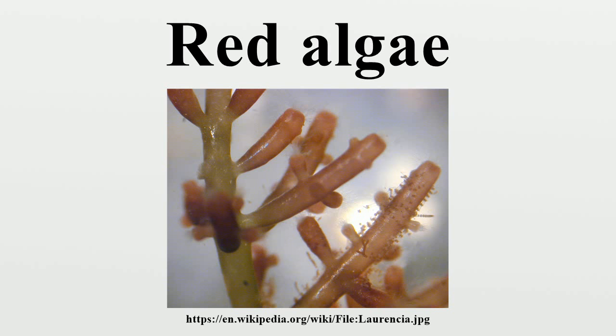Although red algae from the genus Porphyra contain porphyran, they also produce a specific type of tannin called phlorotannins, but in lower amounts than brown algae do.